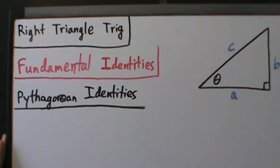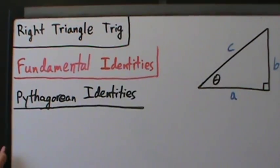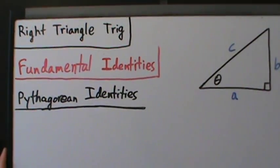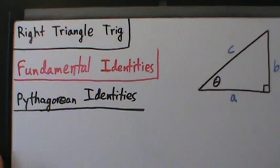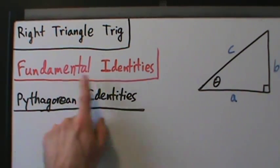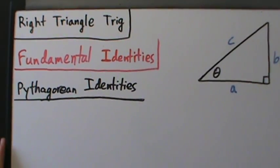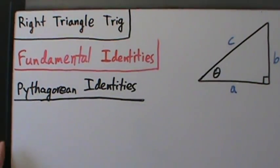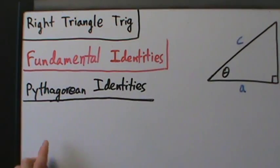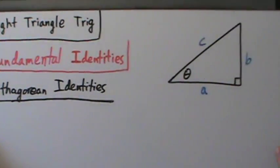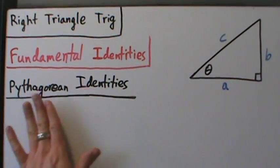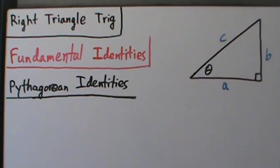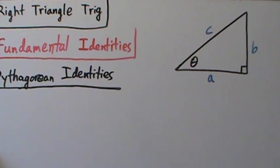A couple videos ago we defined the six trigonometric functions of an acute angle theta in terms of right triangles. Then in the last video we talked about some of the basic relationships between those trig functions called the fundamental identities — the reciprocal identities and the quotient identities. There are also the Pythagorean identities, which we want to do now. These are actually really pretty important. There are three of them, and as long as you remember one of them you can get the other two.